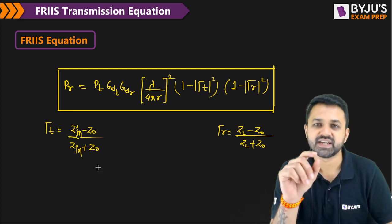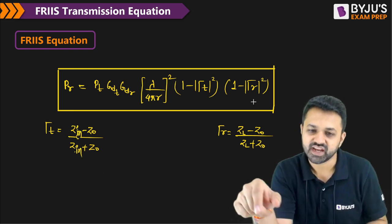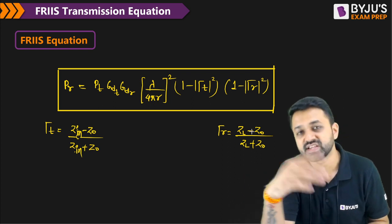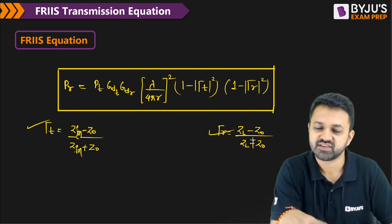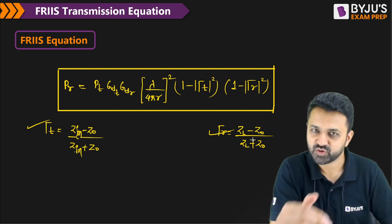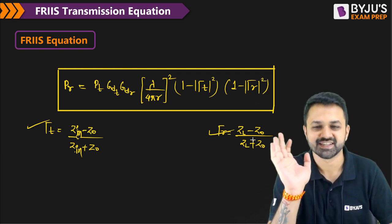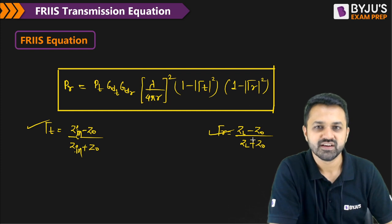You can write Z_in, so Z_in that is the input impedance of the antenna, and here also the input impedance of the receiving antenna. In this way, when you know this reflection efficiency comes in your question, you just apply the Friis transmission equation to calculate the received power.